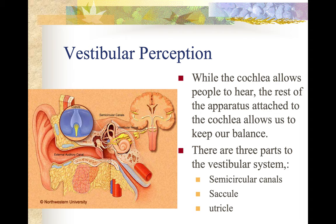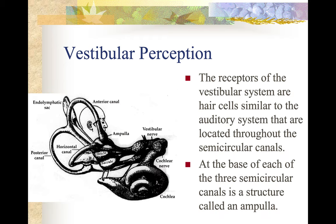The three parts of the vestibular system are the semicircular canals, the saccule, and the utricle. The receptors of the vestibular system are hair cells similar to the auditory system, located throughout the semicircular canals. At the base of each of the three semicircular canals is a structure called an ampulla.